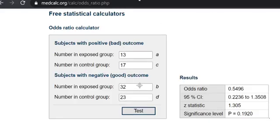One solution is to use a calculator like this one. It's clearly labelled with A, B, C and D. For example A is the number in the exposed group that had a bad outcome. In our example that would be people that ate sausages that got food poisoning.